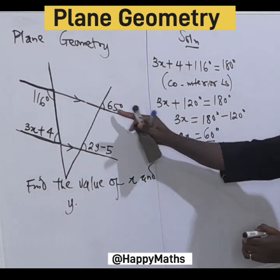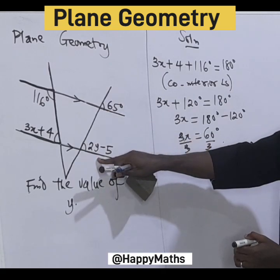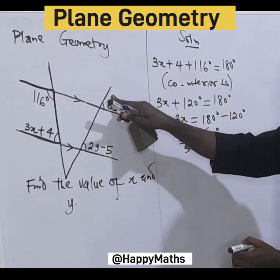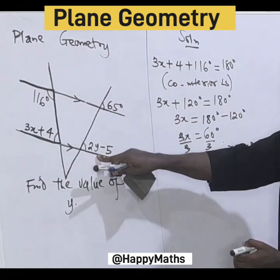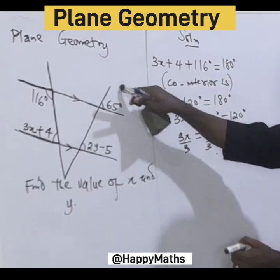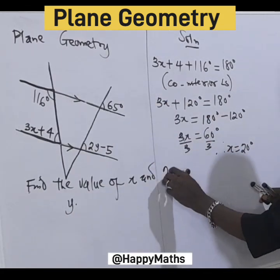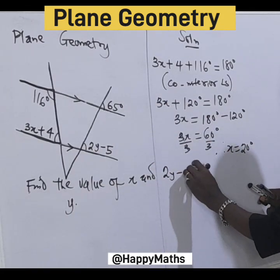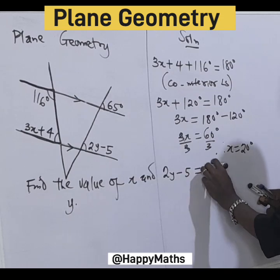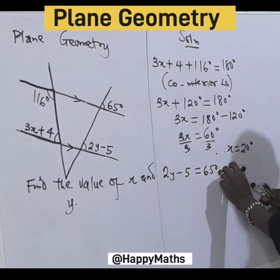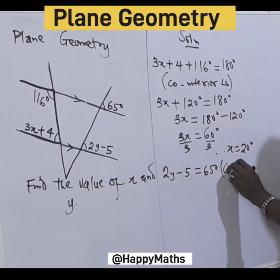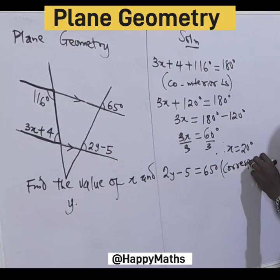Now let's come here. This is an outer angle and this is an inner angle. This 65° corresponds to 2y - 5. So we have 2y - 5 = 65° using corresponding angles, which are equal.